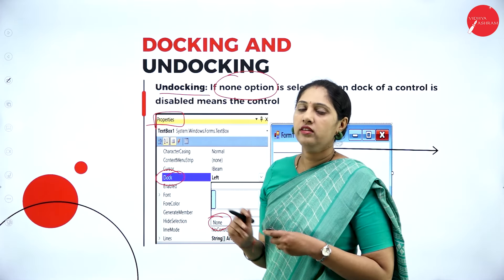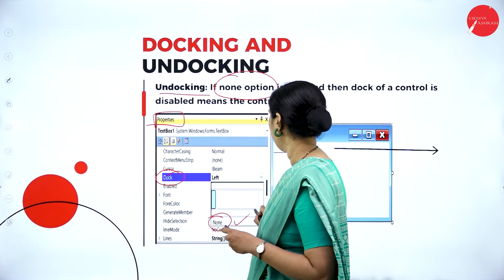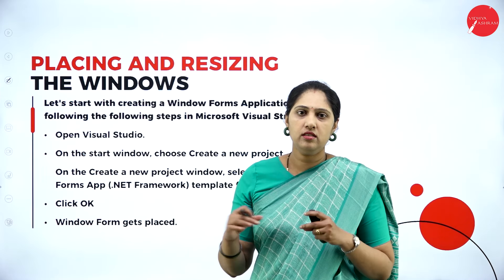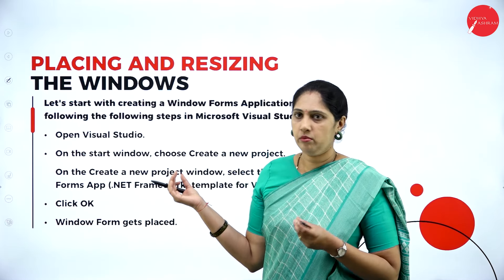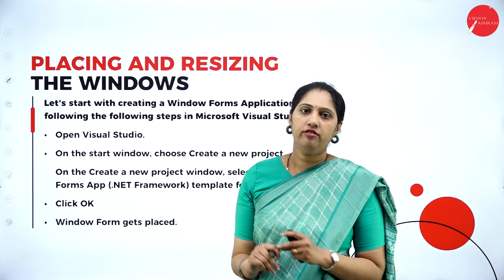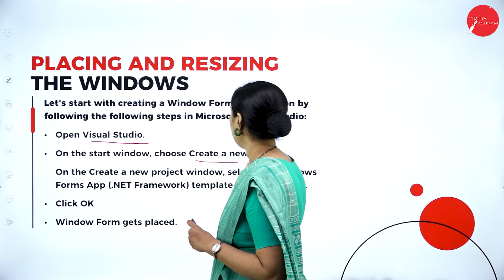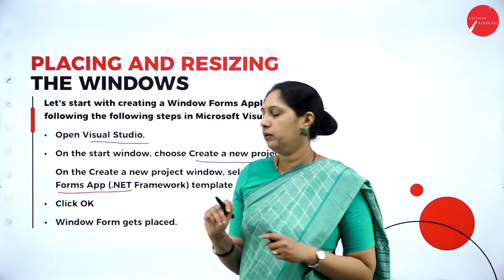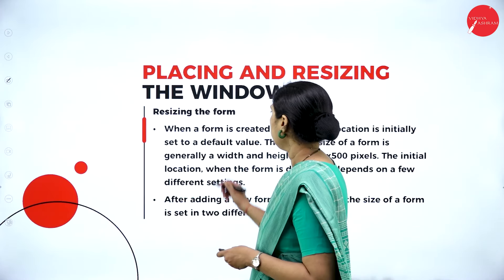If you want to add docking in code, the syntax is: button1.dock = dockstyle.write. If your button name is button1, you call it with that name dot dock. For undocking — if docking is already done but you don't want it — the value will be 'None.' You can see this in the properties window: when you click on the control and go to the properties window, you see the dock name with value 'None,' which means undocking.